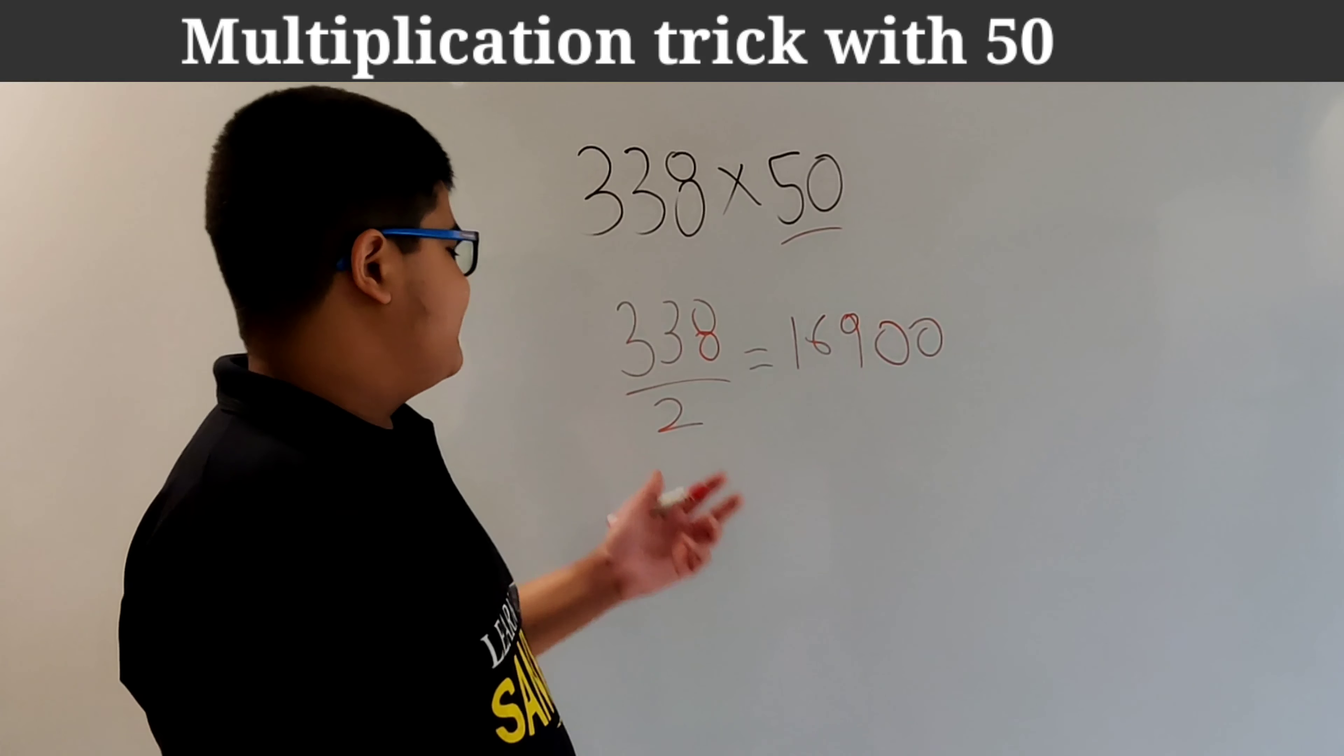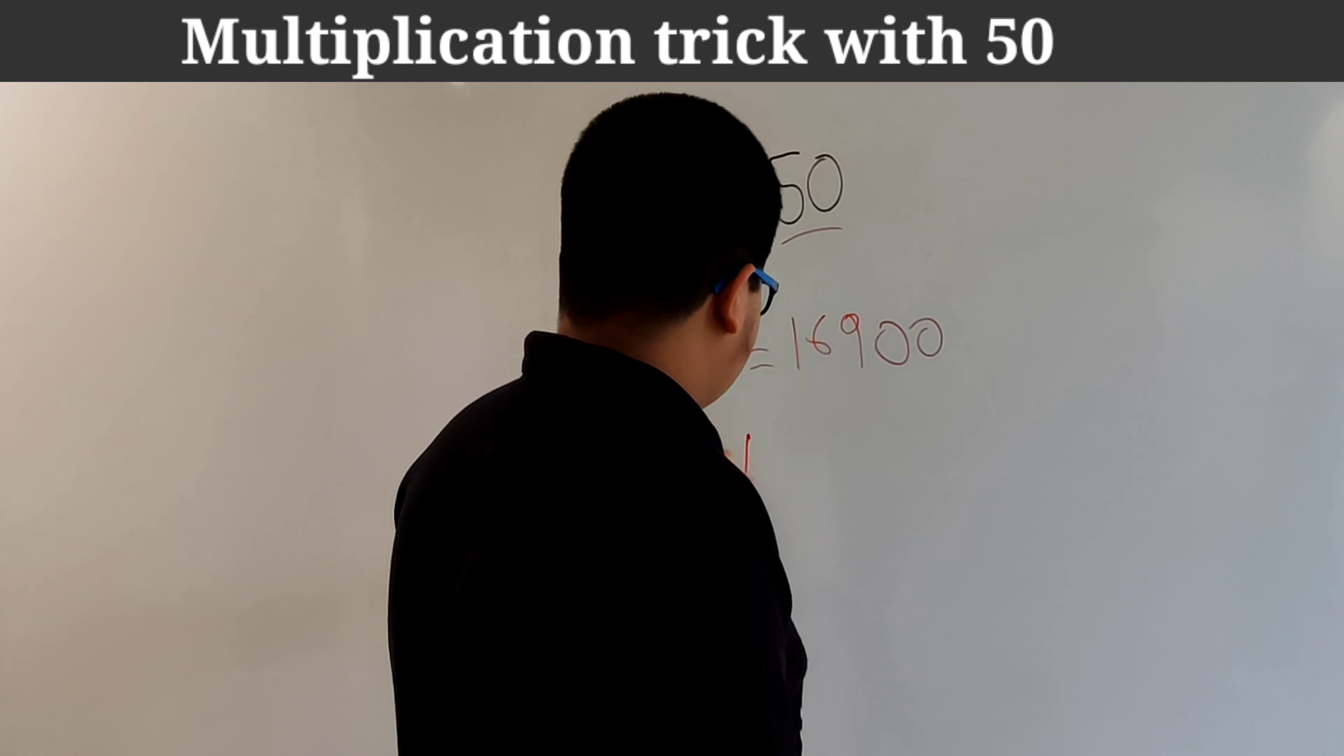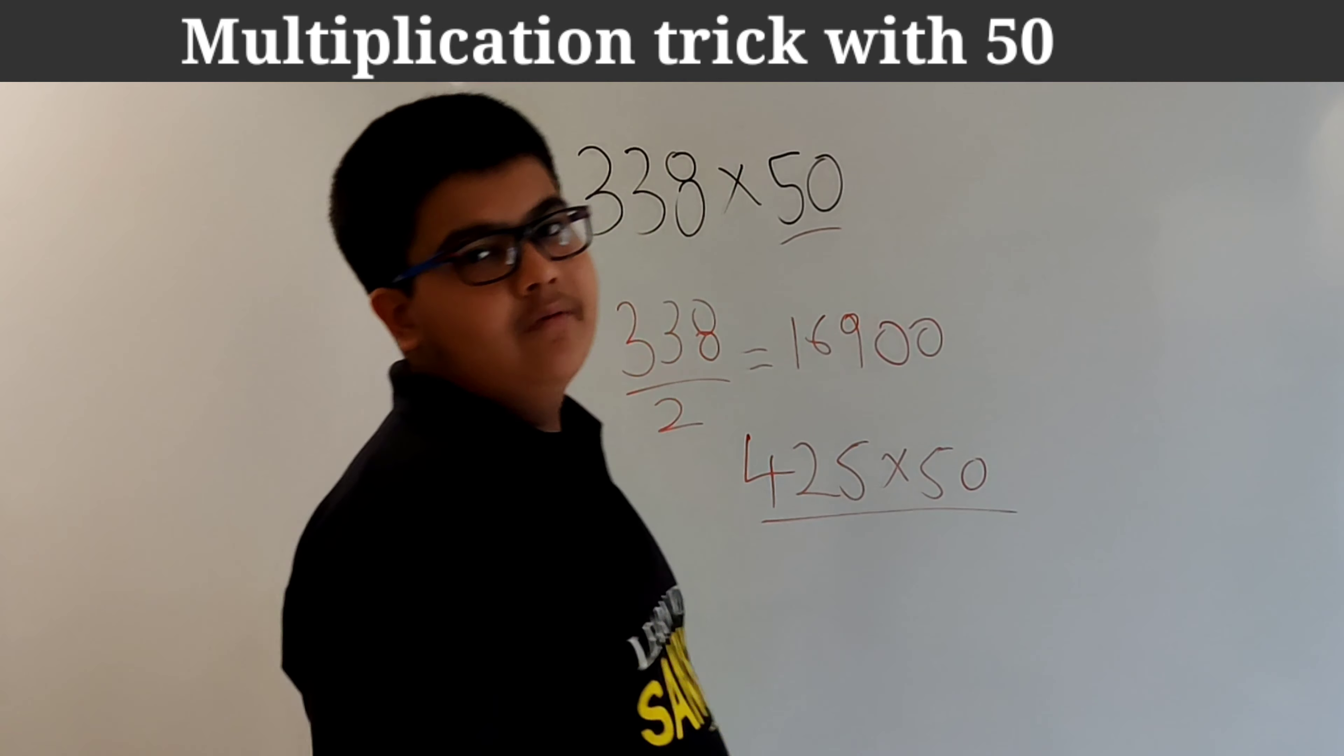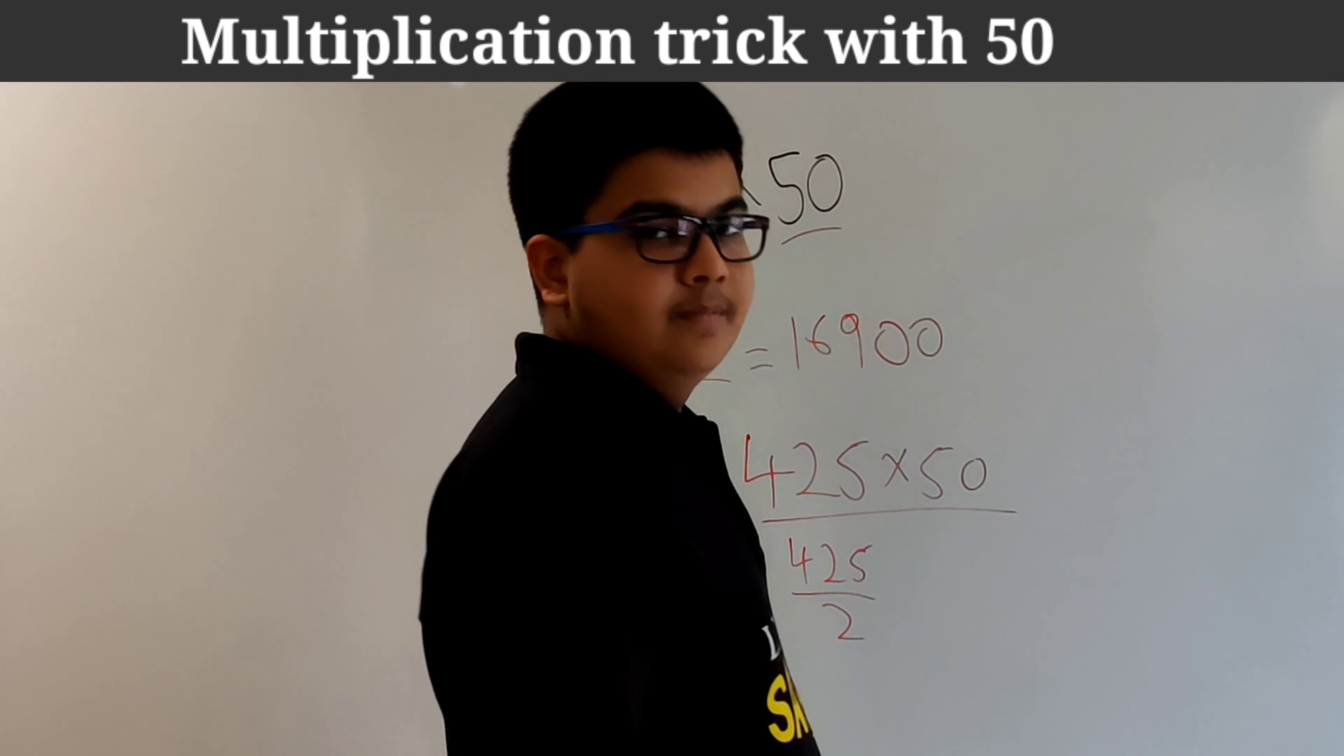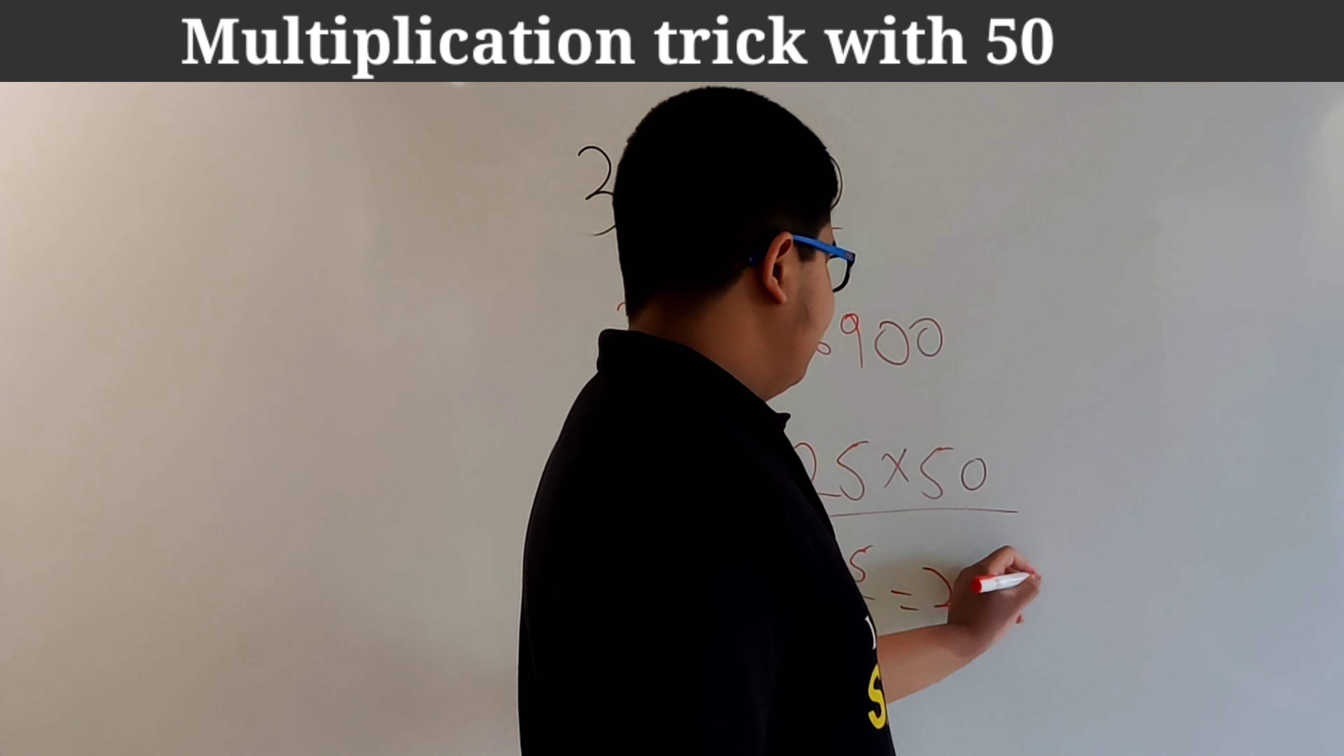So similarly let's practice another question. So consider that this time we have to multiply 425 by 50. So how we will do that? Step 1 will remain the same. 425 divided by 2. So this will give us 212.5.